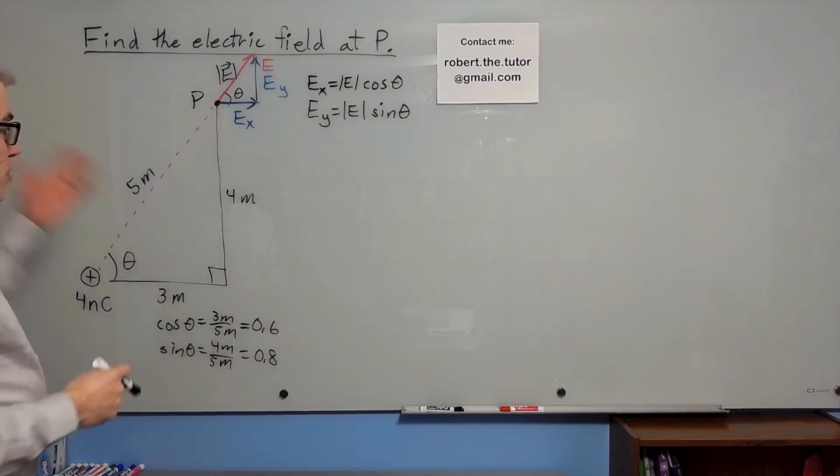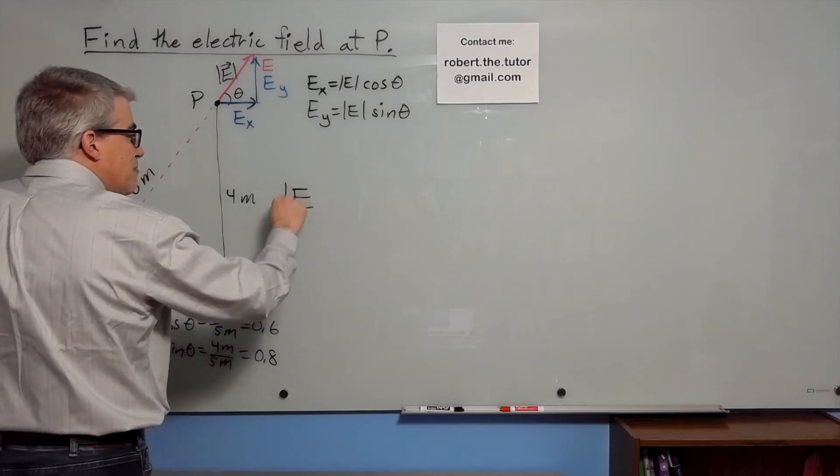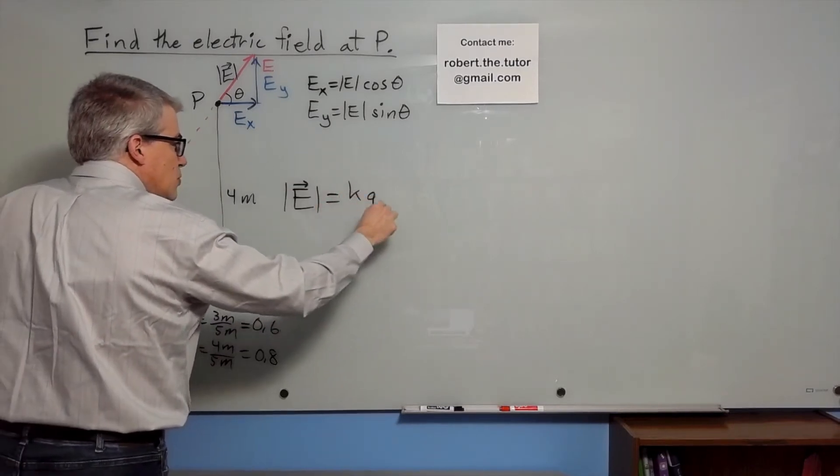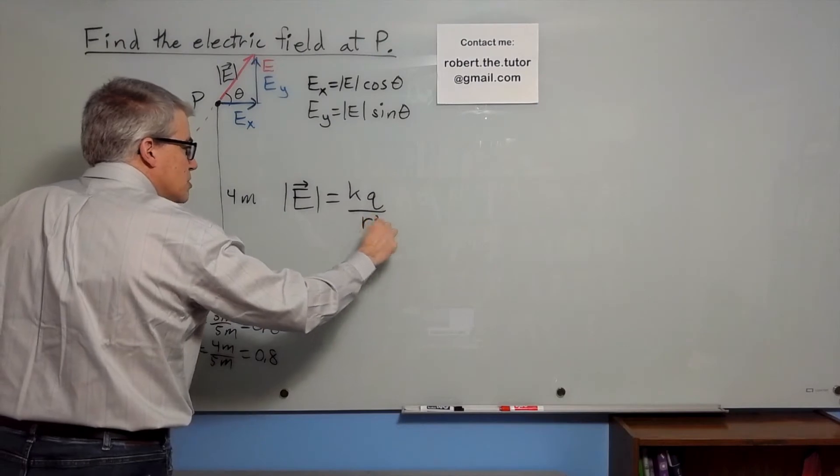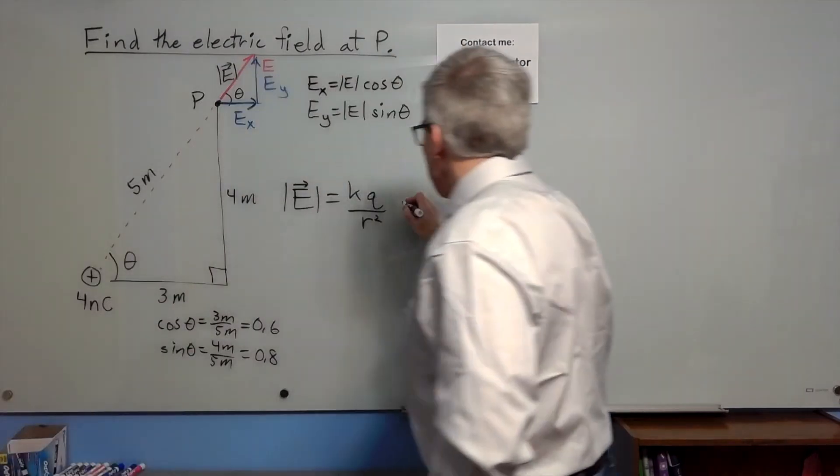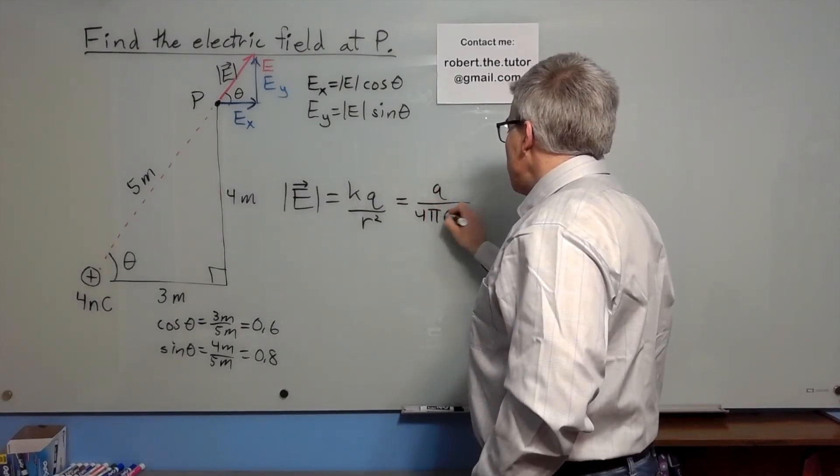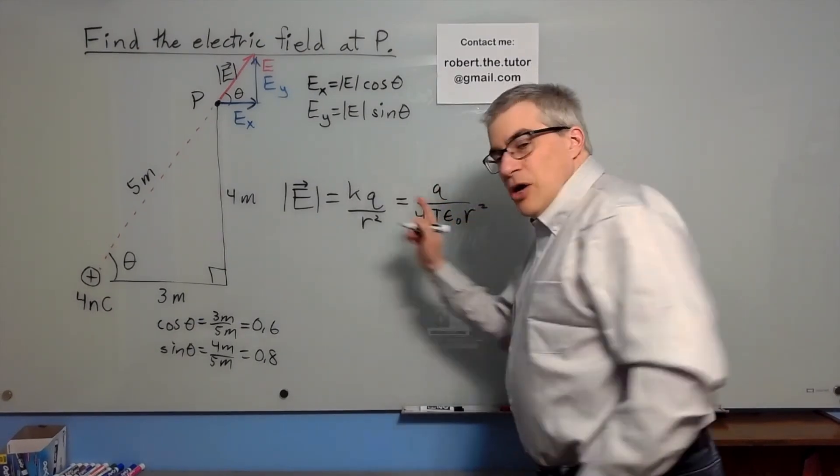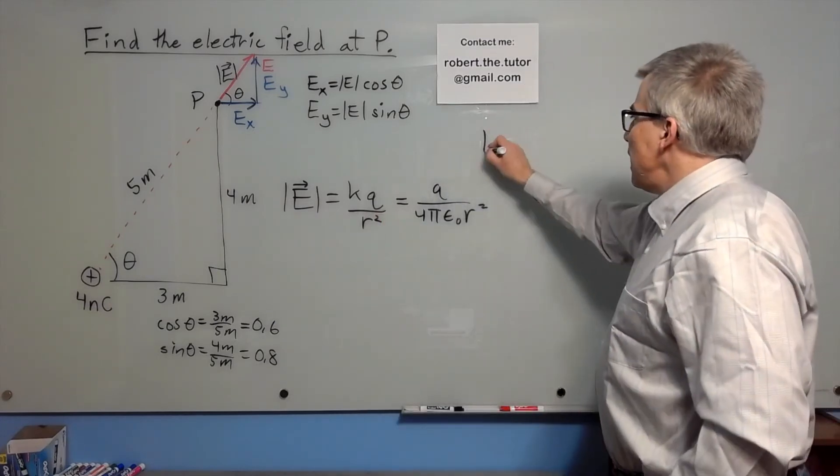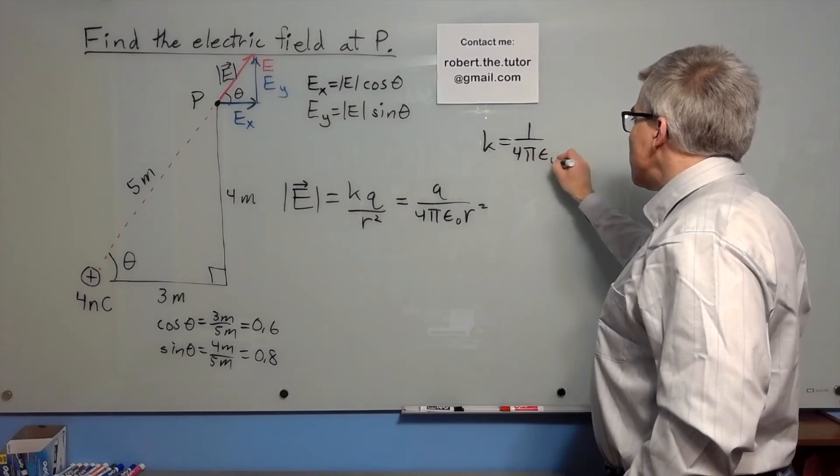But what about the magnitude? Here's where knowledge of actual electric field comes in. The electric field of a point charge, its magnitude, is kq over r squared. You might also see it written as q over 4 pi epsilon naught r squared. Those are the same thing. k is the same thing as 1 over 4 pi epsilon naught.